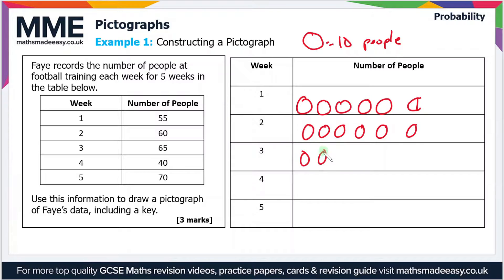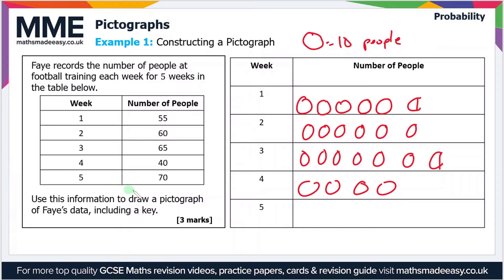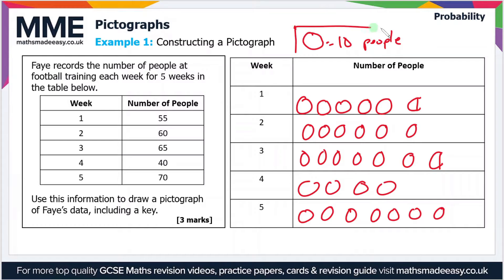Week four has 40 people, so that's four footballs: one, two, three, four. And finally, week five has 70 people, so that's seven footballs: one, two, three, four, five, six, seven. That's a complete pictograph — just remember to include your key, as that's going to be vital. That would be enough to get you all three marks.